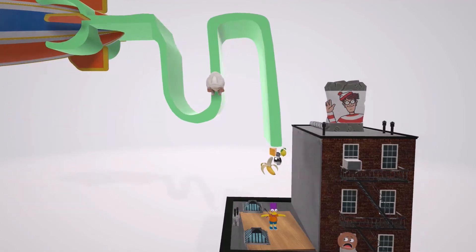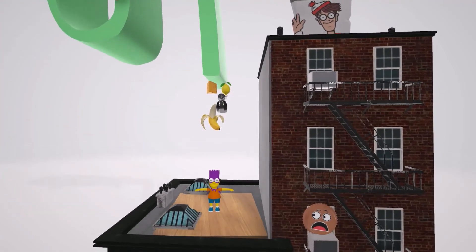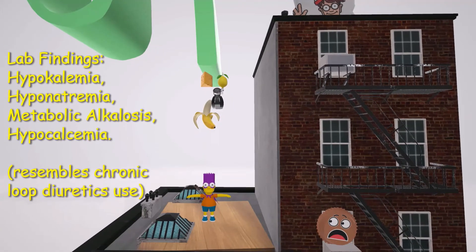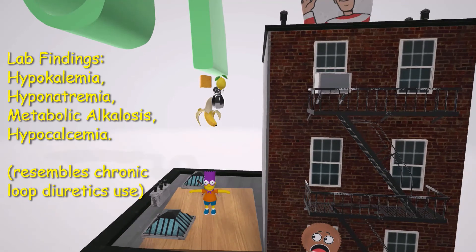Objects are coming out of the collecting duct and about to fall. First, we note the banana — bananas in our videos represent potassium. Potassium ends up in the collecting duct, leading to hypokalemia.